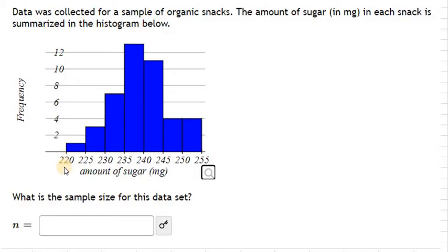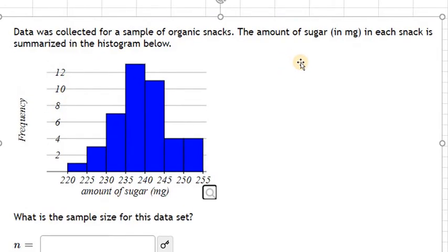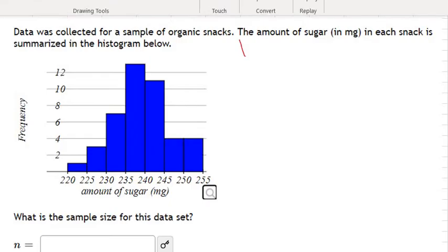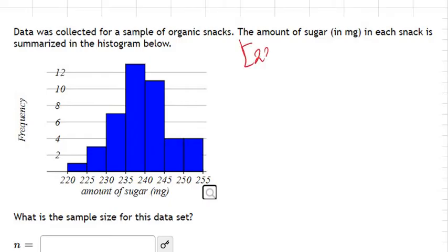So we usually write it as 220 and then comma 225 with open parentheses on this side, meaning that 220 is included, but 225 isn't included. We write it like that, 220 comma 225 open.